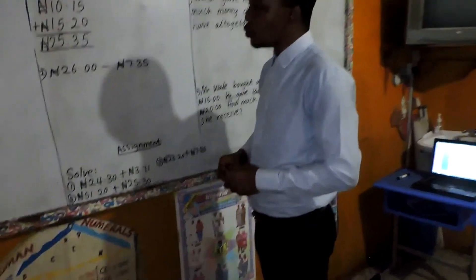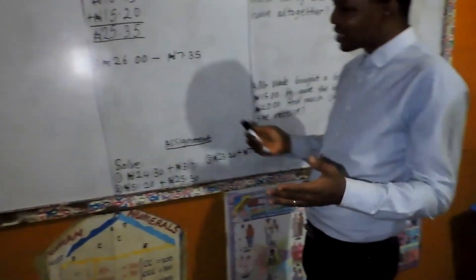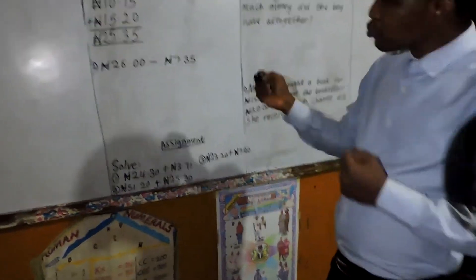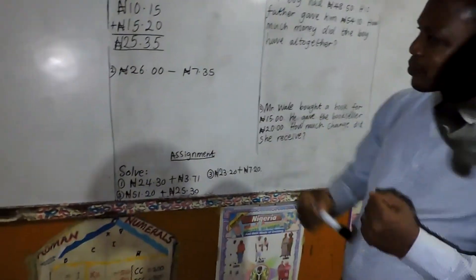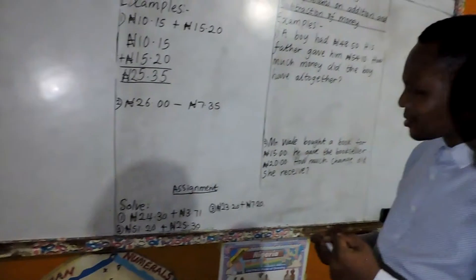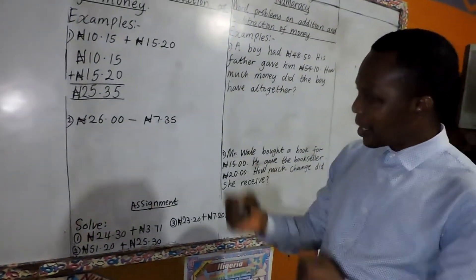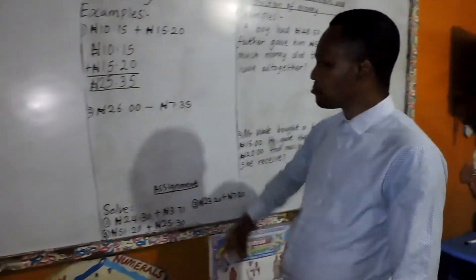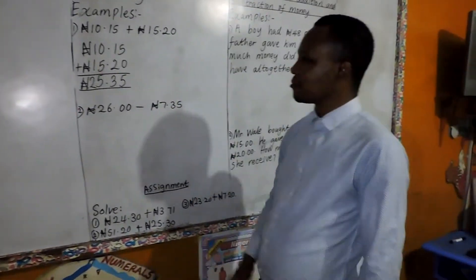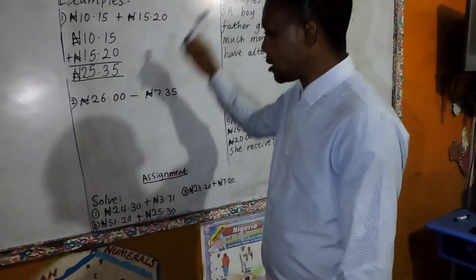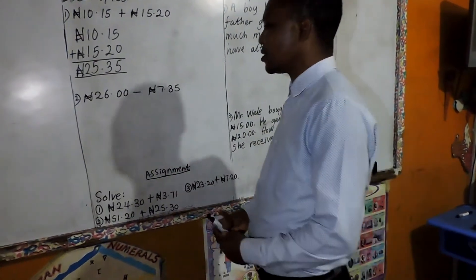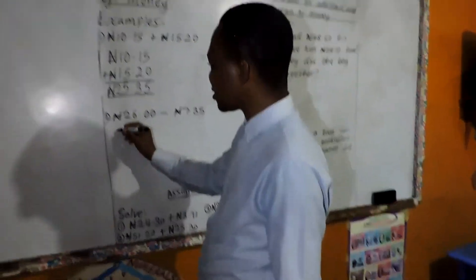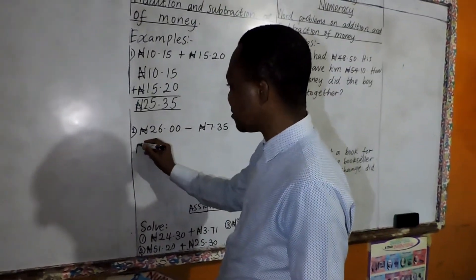We are going to number 2. And number 2 is telling us about subtraction, right? The sign for subtraction is minus — take away. Let's arrange without taking our time.